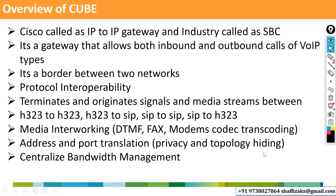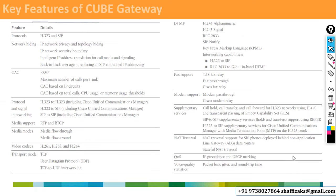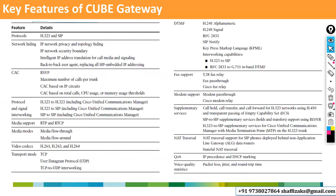Centralized bandwidth management — we can centrally manage bandwidth. The protocols supported are H.323 and SIP. Network hiding: the call comes from the IP phone through Call Manager to the gateway, but outside it will not display any Call Manager information — it displays the call as originating from the gateway. That is IP network privacy and topology hiding. CUBE acts like a proxy — it's an IP network security boundary.